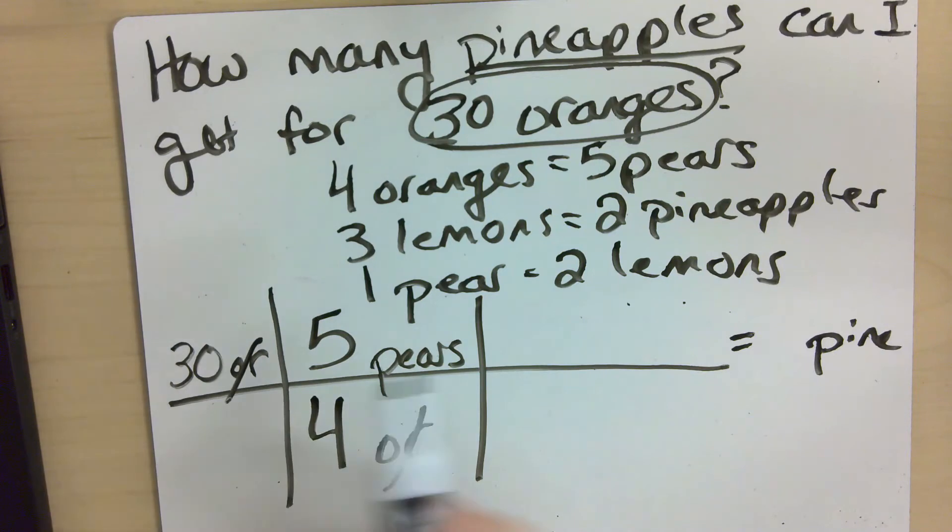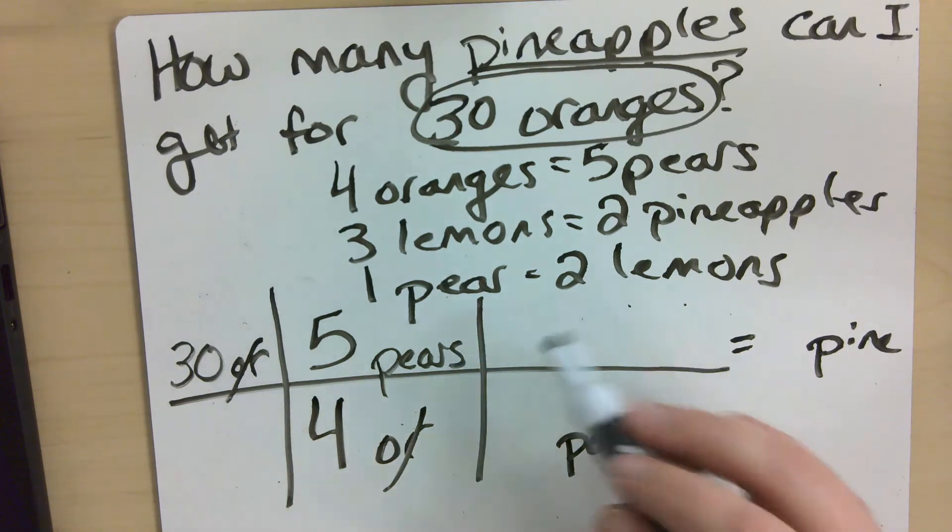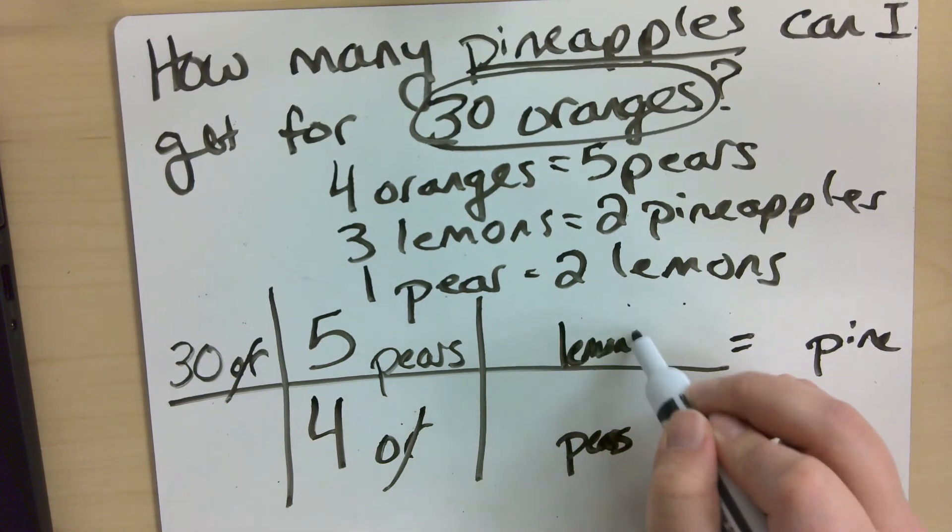Now, oranges cancel out and I'm left with pears. That's not what I want in the end, so I'm just going to keep going. So I'm going to take pears and move them down. And what can I convert pears to? Well, I can convert pears to lemons.